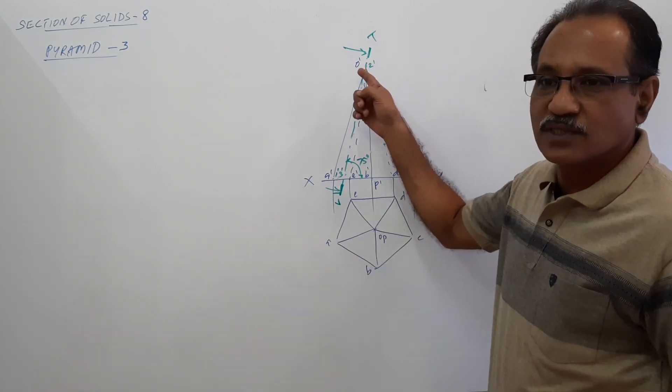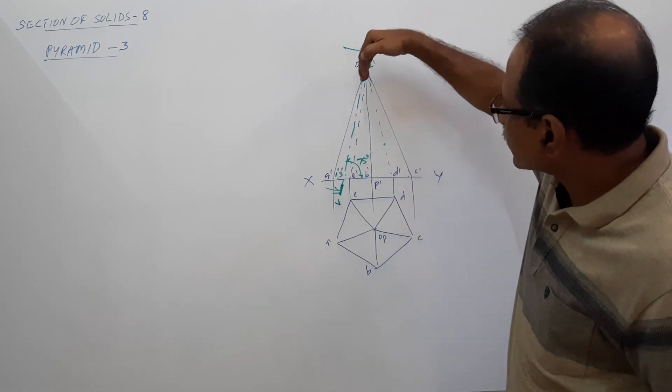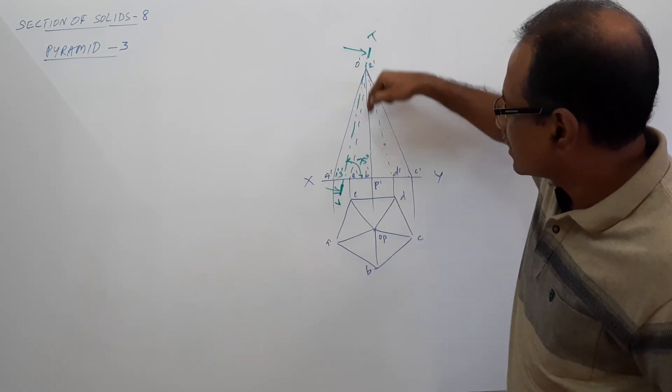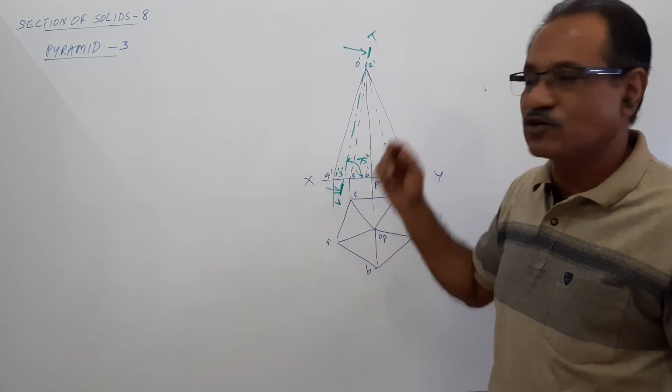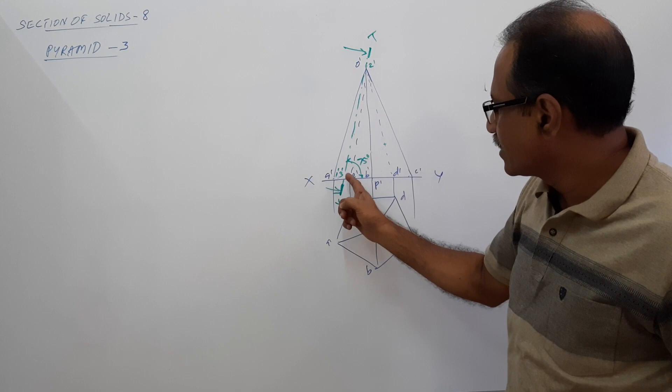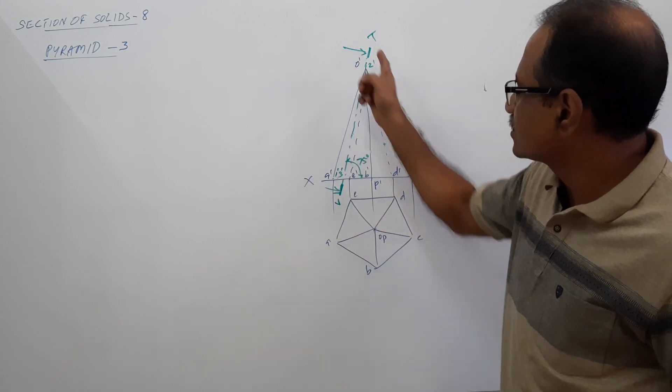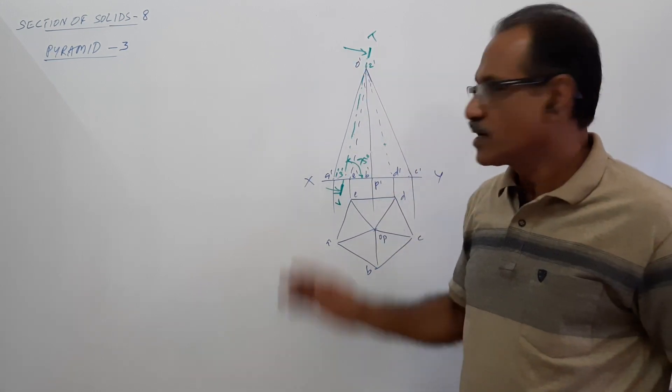This is the apex. So what you have to do is keep your protractor like this, measure 15 degrees. 75 plus 15 is 90. If you measure 15 degrees there, this will become automatically 75 degrees. Chain line, green lines, V, T, cutting plane.